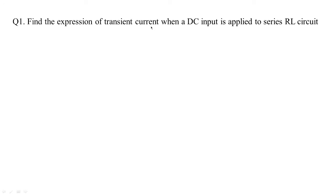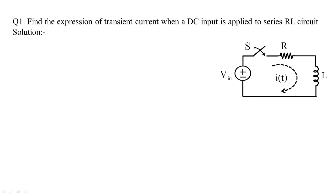The question is: find the expression of transient current when a DC input is applied to a series RL circuit. The series RL circuit has an input voltage connected to R and L, and a transient current flows when the switch is closed. When the switch is open, the resistor and inductor don't receive any energy, so the current is zero. The current through the inductor will not change instantaneously.